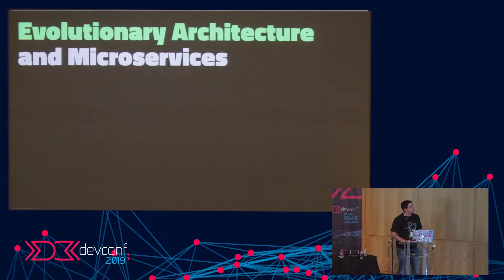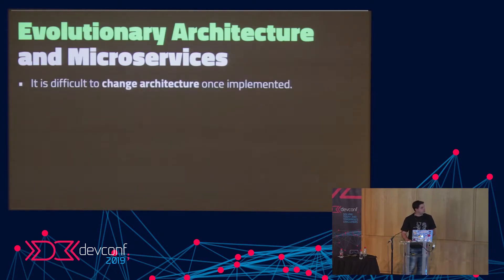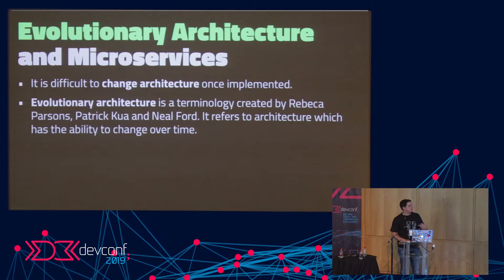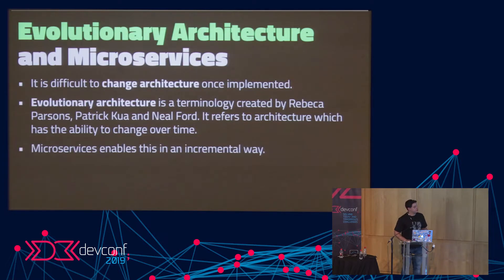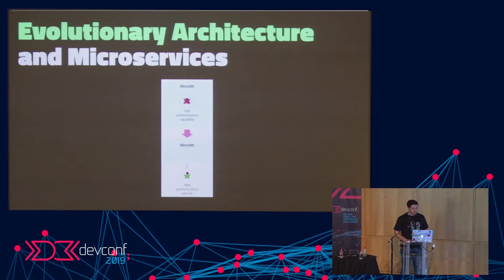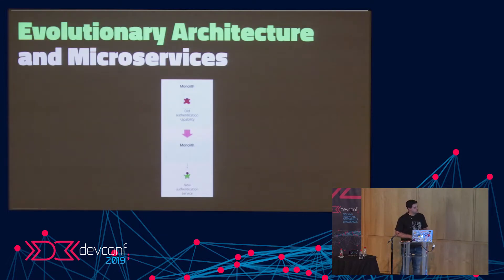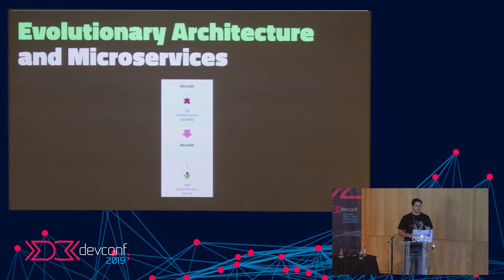Evolutionary architecture is defined as architecture which has the ability to change and evolve over time, and microservices enable this in a very incremental way. Here's a diagram of what you generally end up with — here's a monolith with authentication code grouped into a package. To split apart your monolith using evolutionary architecture, you write the new authentication service, then direct traffic to it. If everything works as intended, you then retire the old code — it's no longer in the monolith.